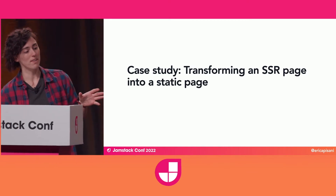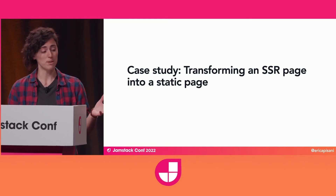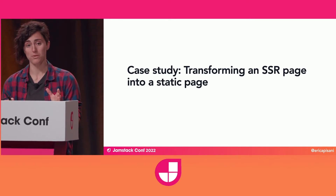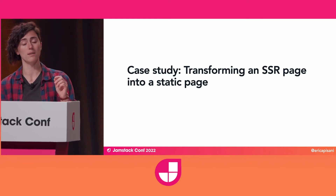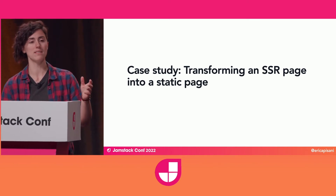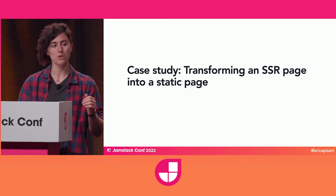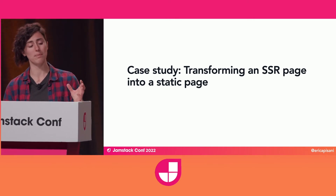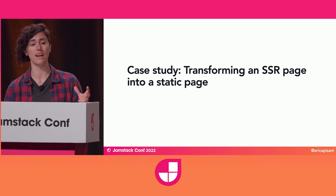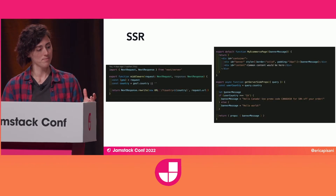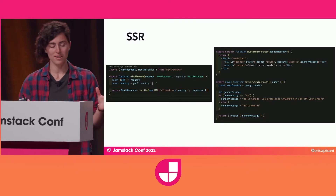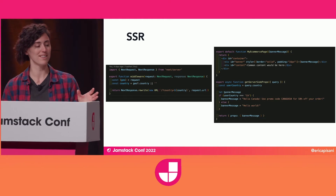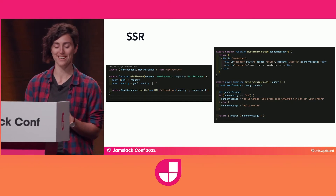Now let's look at a quick common Jamstack case study: transforming a server-side rendered page into a static one. A server-side rendered page hits the origin server every single time, so if you have a very highly trafficked page, that's a lot of load on the server. If you can change it into a static page, you can cache it on the CDN for faster access. In our use case here, let's imagine I have a thriving e-commerce business with a simple Next.js site, and a page that most users will see.